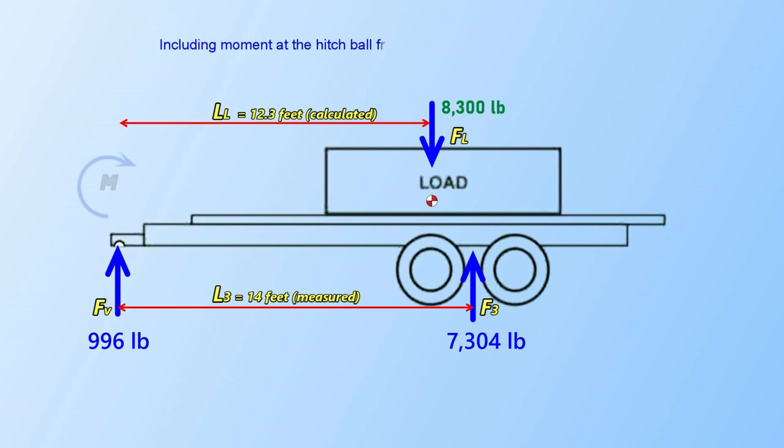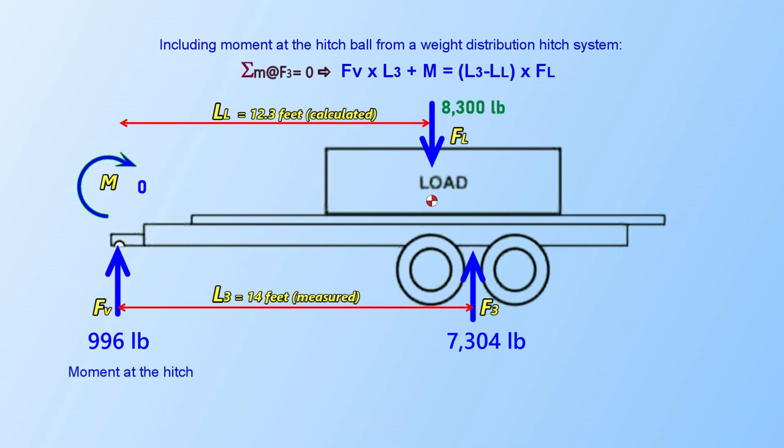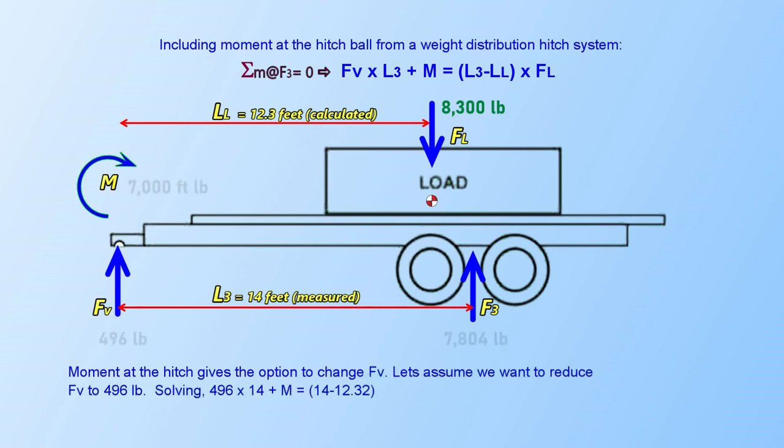Hitch weight distribution systems all work by providing a moment at the ball connecting the trailer to the tow vehicle. We can include consideration for these moments to the sum of moments equation, and then calculate what is required at the weight distribution hitch for a given tongue vertical weight.